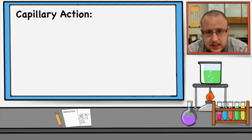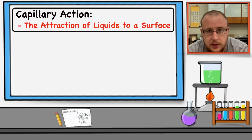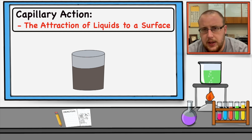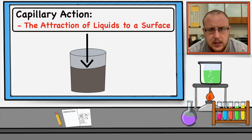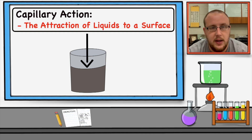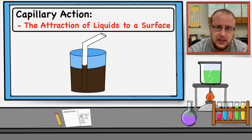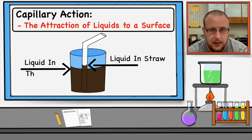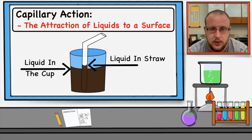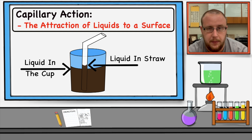Capillary action is another form of surface tension, where liquid water is attracted to surrounding surfaces. This is why when you get a glass of water, you can see the water climbs up on the sides, forming a curve or meniscus. The best example of capillary action is when a straw is placed into a drink — you can see that the level of the drink inside the straw is higher than the level of the drink in the cup. The liquid in the straw is attracted to the solid sides of the straw, and those forces hold it up. There are two distinct levels: the level of the drink and the level of the liquid within the straw.